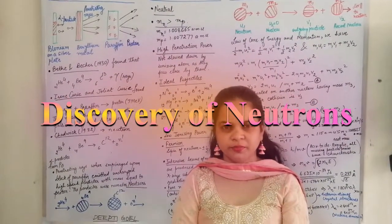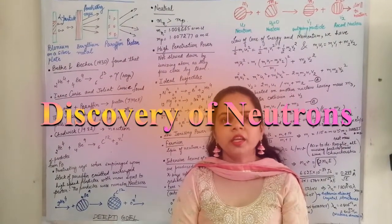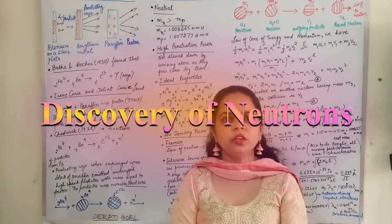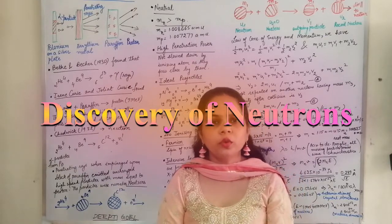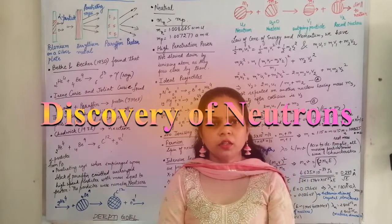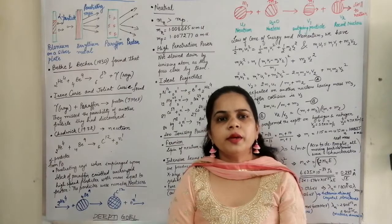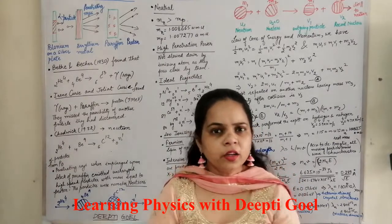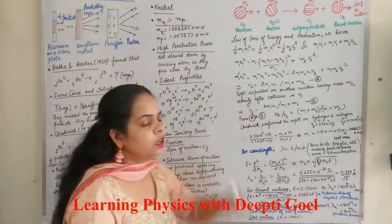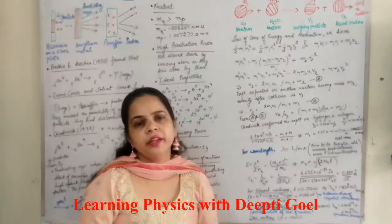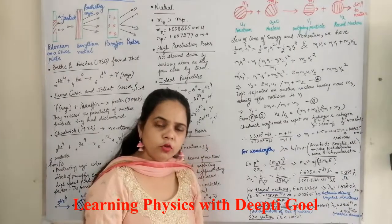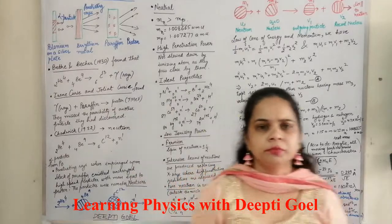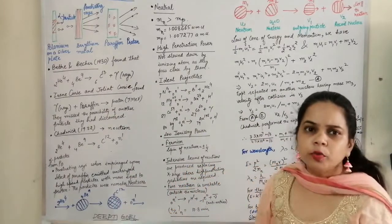Hello students. Today we are going to discuss about neutrons — how neutrons were discovered, what were the basic properties of the neutron, and also we shall be discussing how to calculate the mass and wavelength of the neutron, and what are the different types of neutrons that could be found.